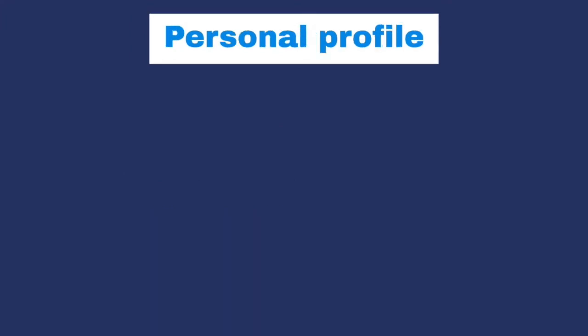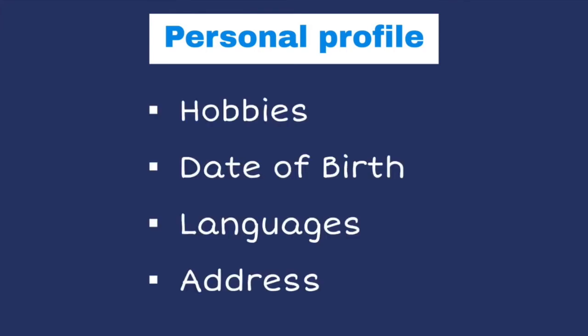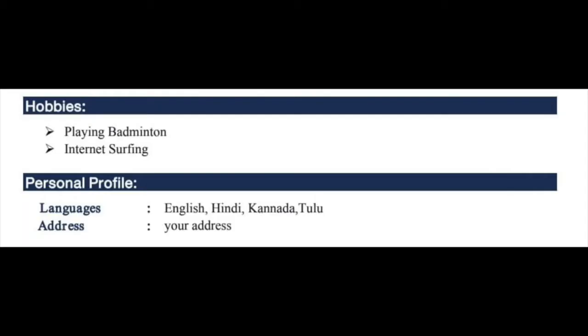The final section is the personal profile, where you should mention your hobbies, date of birth, address, and languages known. These four things are sufficient for this section. Adding things like your name again, father's name, or gender is not required. This covers all the different sections and their contents needed in a resume.